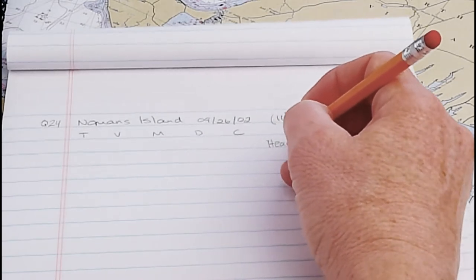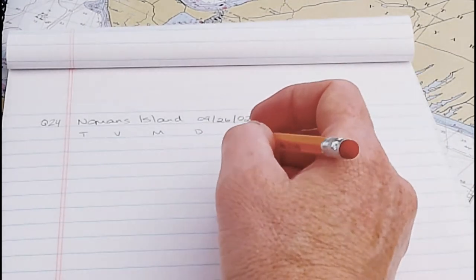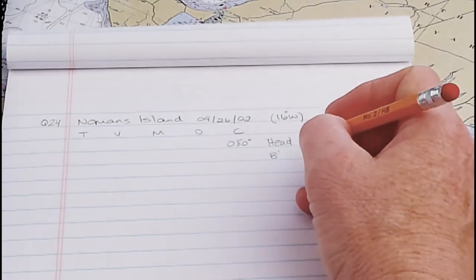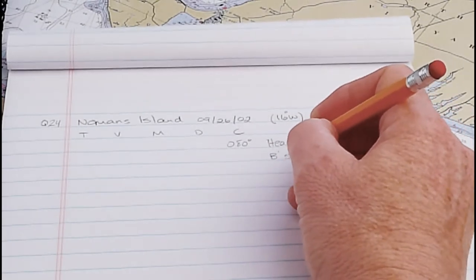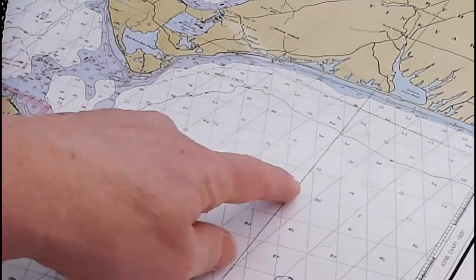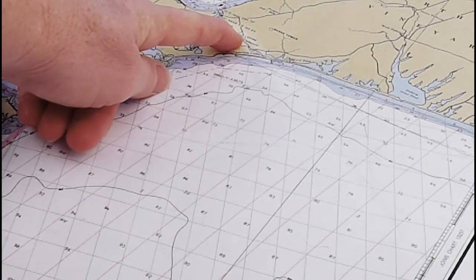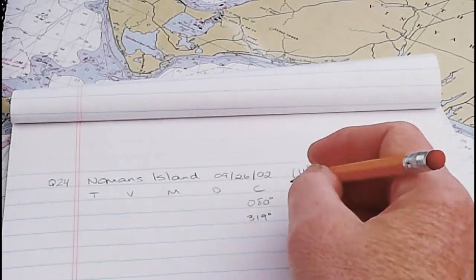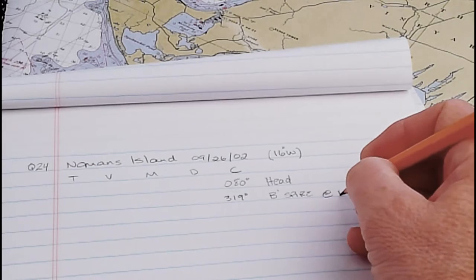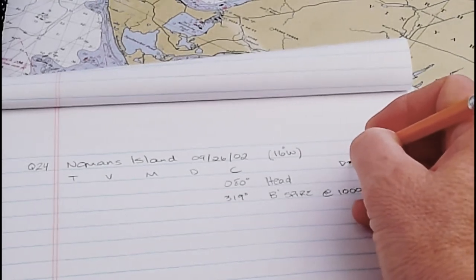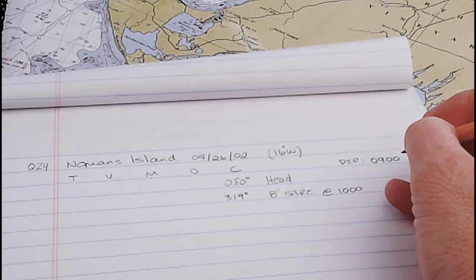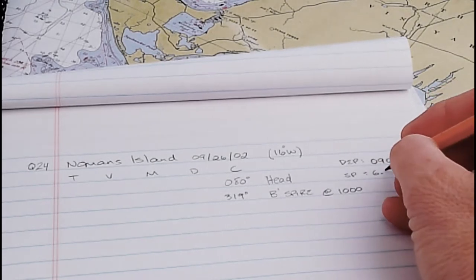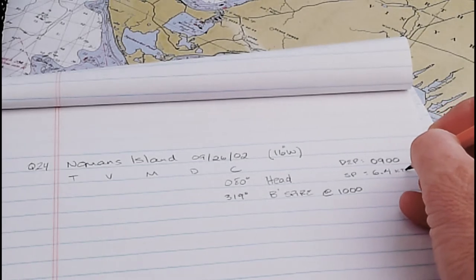So our heading is 080 for ship's compass, and this bearing that we took on the spire, which I see is just right there, which will mark spire, that was 319 degrees, and that was at 10 o'clock. We departed at 9 o'clock, and our speed was 6.4 nautical miles per hour, otherwise known as knots.